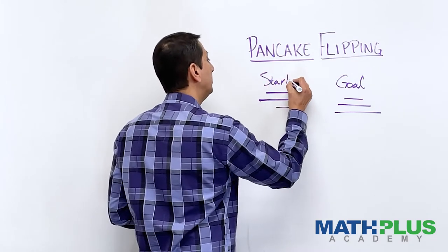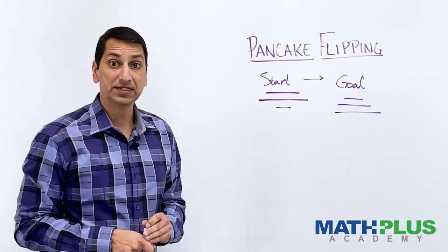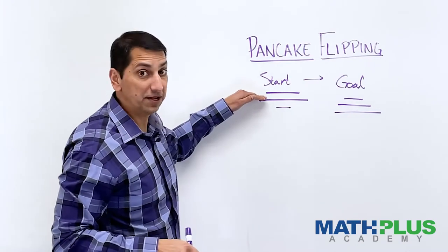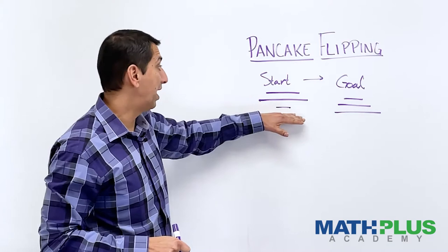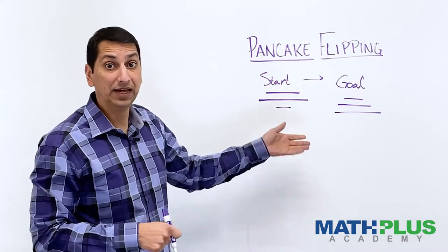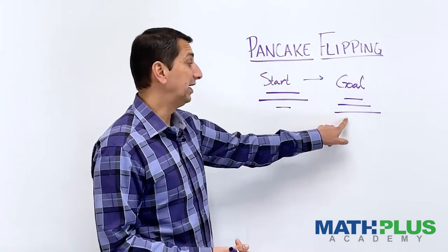And the only thing you can do is stick your spatula in somewhere between the first two, or the second and third, or maybe at the bottom and flip the whole stack. And you can do this over and over to try to get to that.